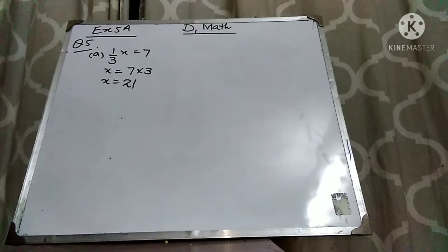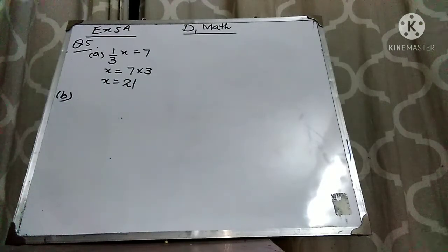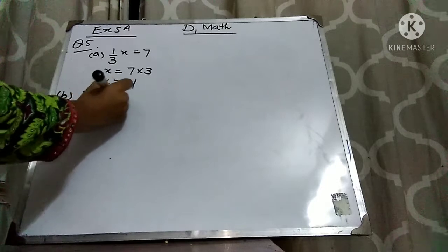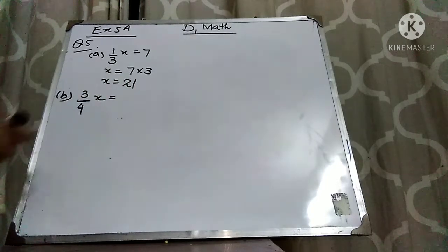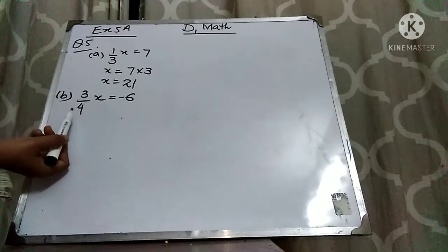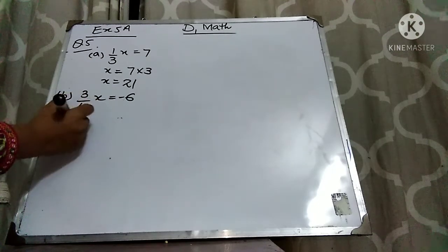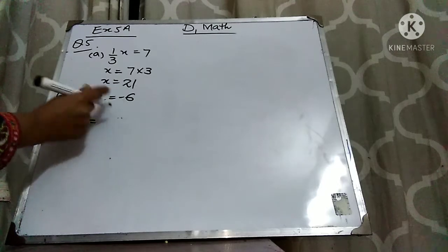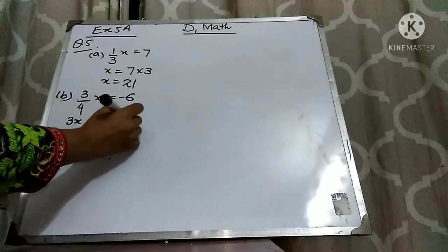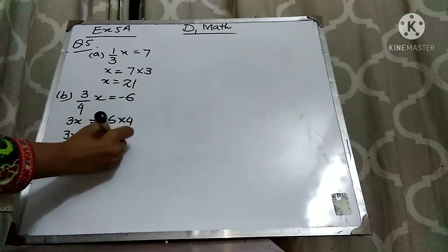Now let's come to Part B. Part B is 3/4x = -6. Here you can see that this 4 is dividing over here. If it goes to that side, it will multiply with 6. So 3x will remain here. This 4 is dividing over here — if it goes to that side it will multiply. So now multiply them: 6 times 4 is -24.